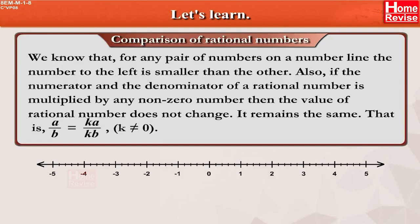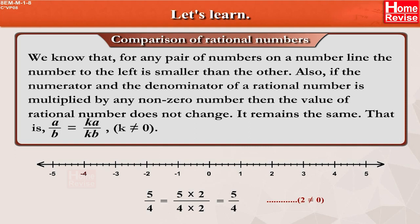Let us learn comparison of rational numbers. We know that for any pair of numbers on a number line, the number to the left is smaller than the other. Also, if the numerator and the denominator of a rational number are multiplied by any non-zero number, then the value of the rational number does not change — it remains the same. That is, A upon B is equal to KA upon KB, where K is not equal to 0.